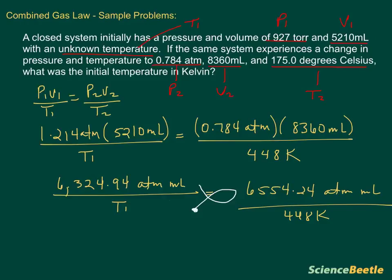So that means I'm going to take my 6,324, so I'm going to take this number and I'm going to multiply it with the 448 first. And so let's do that now. 6,324.94 times 448. That should give you, if you do the math, 2,833,573.12.